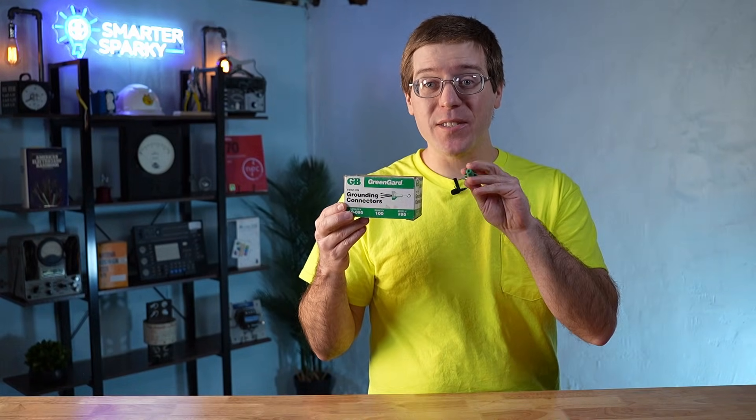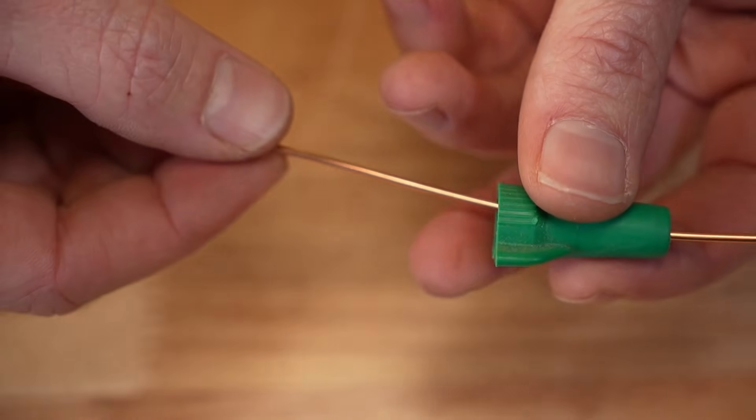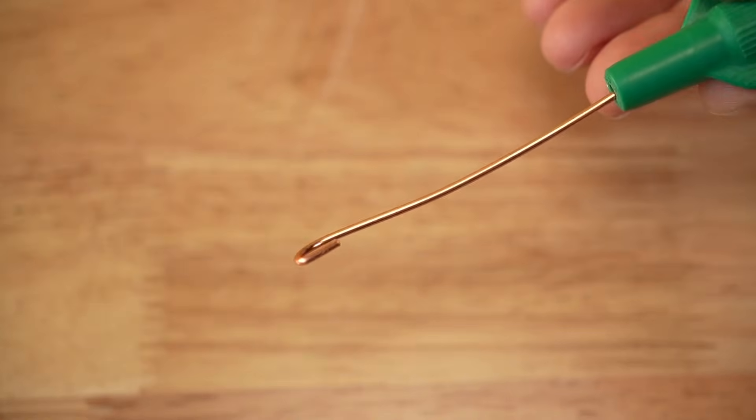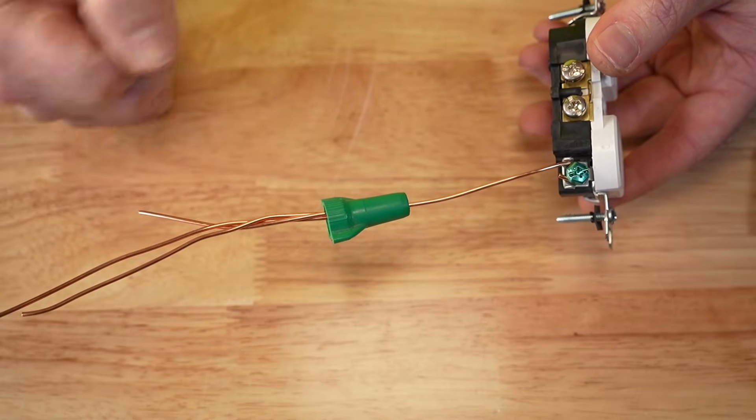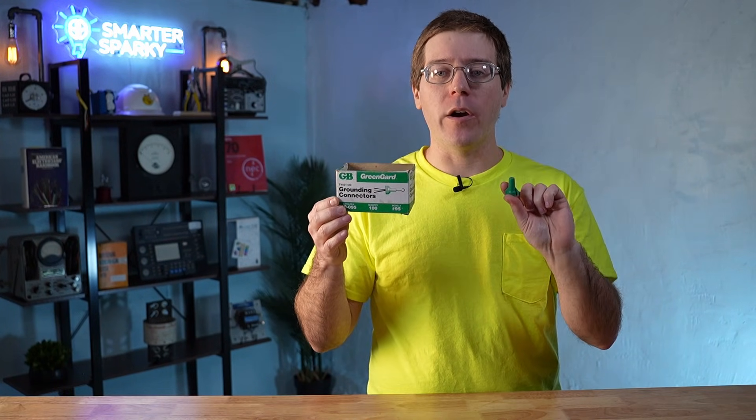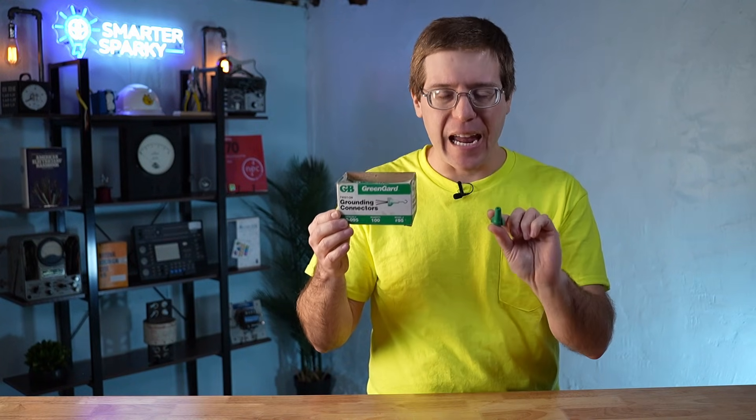They also make these green wire nuts with a hole in the top designed specifically for connecting grounding conductors like so. It's important to never use these for hot or neutral wires because the hole can leave bare conductors exposed at the top of the wire nut, creating a potential shock hazard. Use these green wire nuts only for grounding connections to stay safe and code compliant.